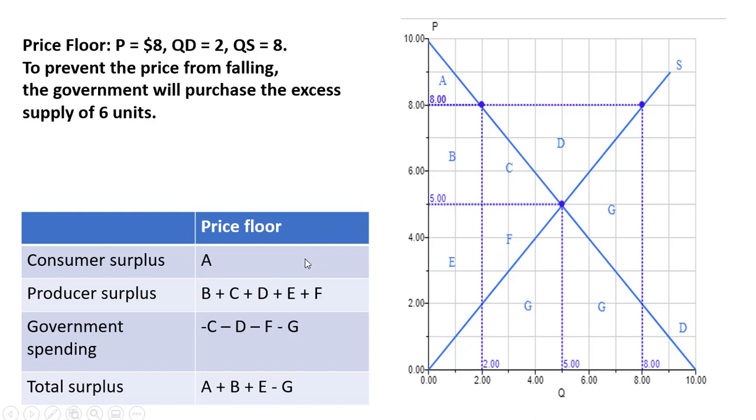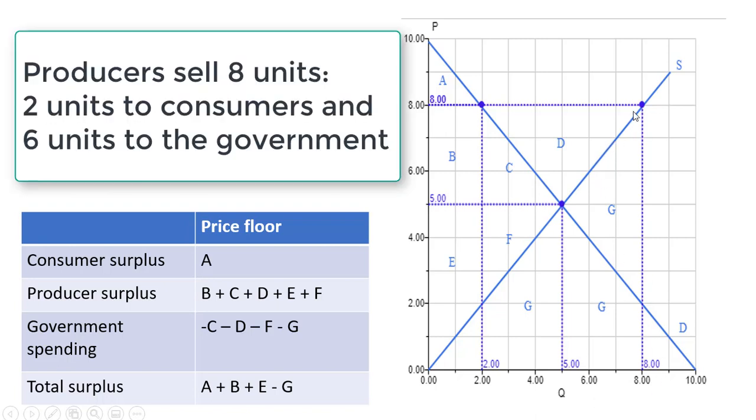Producer surplus is going to be the difference between the price that producers are receiving and the supply curve up to the last unit that producers sell, which is the eighth unit. So we have this giant triangle here, B, C, D, E, and F representing producer surplus.